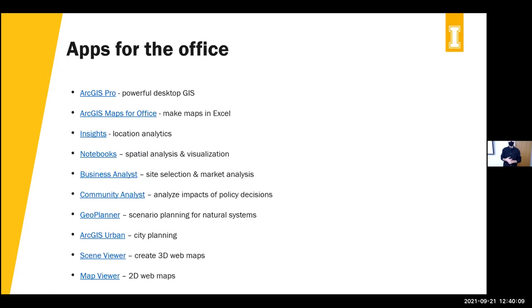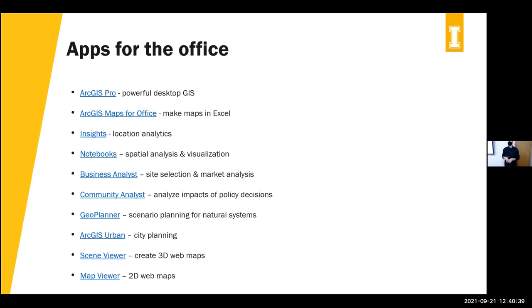For apps for the office, ArcGIS Pro is the newer software replacing ArcMap and ArcCatalog for long-time desktop ESRI users. If you're an Excel person, there's a plugin called Maps for Office that adds mapping capability to Excel. Insights is available on ArcGIS Online and has a lot of statistical and analytic operations you can perform — more like Tableau if you're familiar with that.